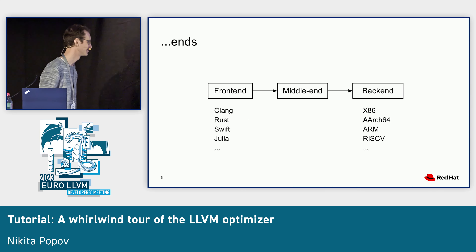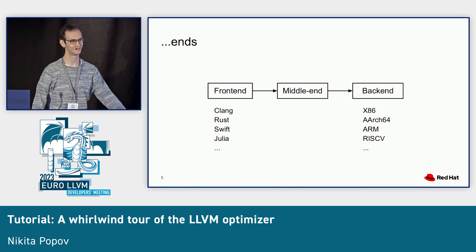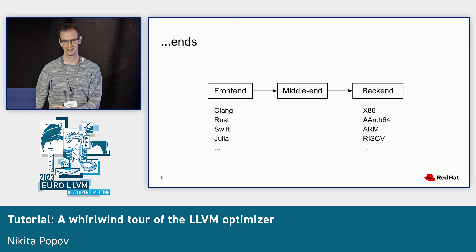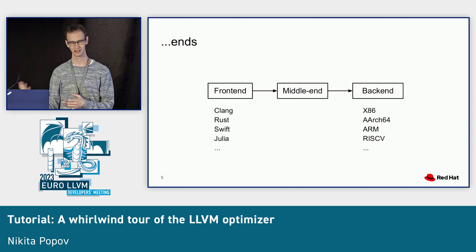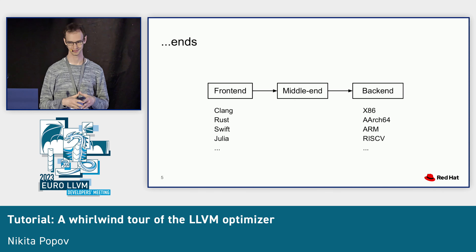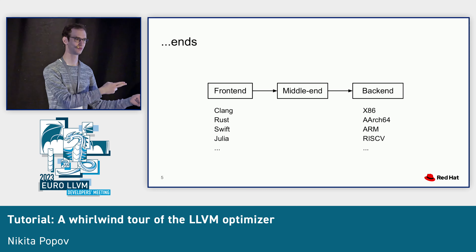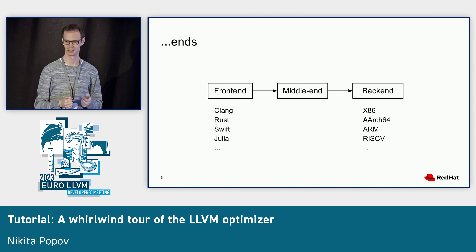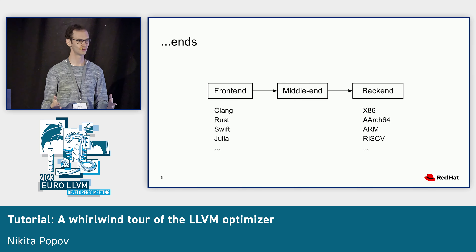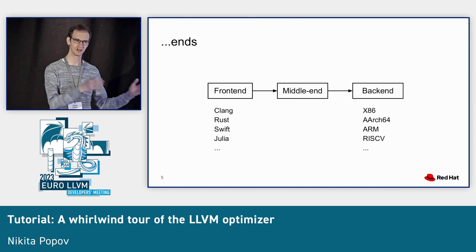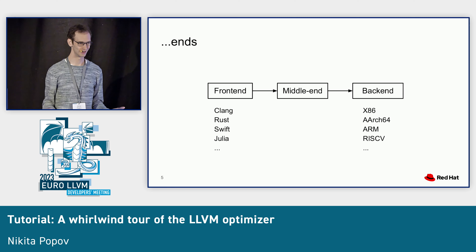Let's jump into the main content with a bird's eye view of the compiler. Classically, we split the compiler into three parts: the front-end, the middle-end, and the back-end. The front-end deals with programming language-specific concerns — we have many different front-ends, for example Clang for C and C++, and also front-ends for Rust, Swift, Julia, and many other languages that ultimately use an LLVM back-end and middle-end. On the other side, the back-end handles the target-specific concerns depending on which CPU architecture you're targeting — x86, AArch64, RISC-V, and so on. Between those two, in the middle, we have the middle-end, which is supposed to be reusable for all programming languages and all targets. In practice, programming language and target concerns do leak into the middle-end, but aspirationally it's supposed to be kind of independent.